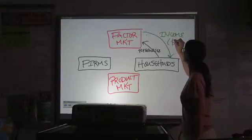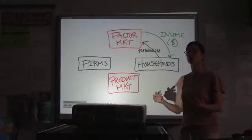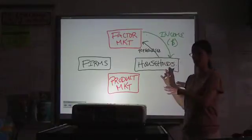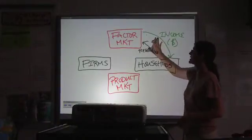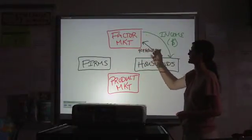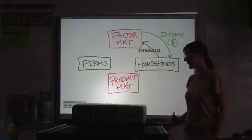So yes, it's money. Money that is earned by members of a household is income. So that's what we want to call it on this graph. So that's the exchange that's happening between households and firms through the factor market. They provide resources and they get paid.